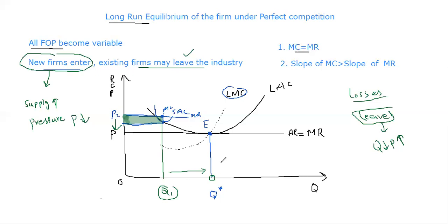This was today's lecture on the long-run equilibrium of the firm under perfect competition. Next, we will discuss the supply curve of the perfect competitor firm under a short period of time, and then we will study the next chapter on Monopoly. This is the end of today's lecture. If you have any queries, you are free to ask. Best of luck. Thank you.